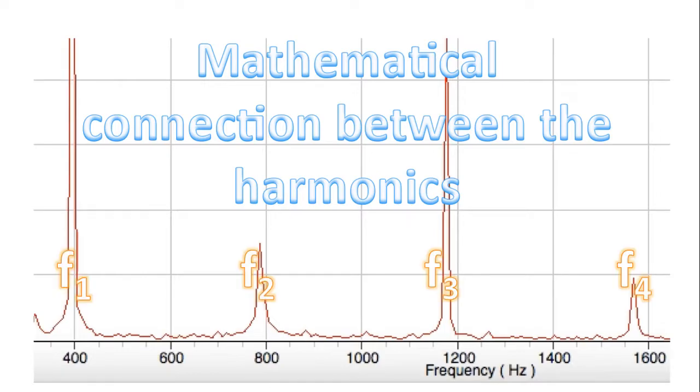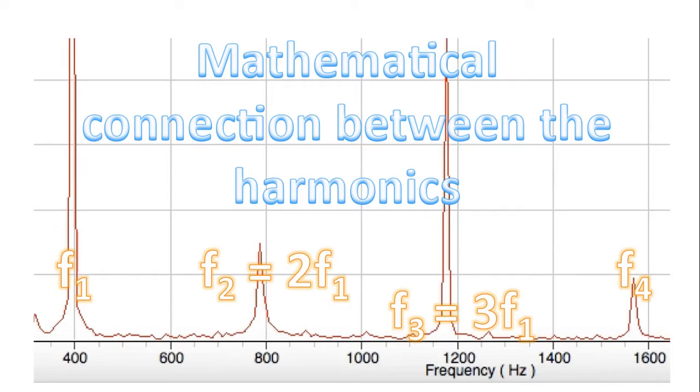Now there's a mathematical connection between the harmonics. So we'll give them the following names: f1, f2, f3, and f4 for first harmonic, second harmonic, third harmonic, and fourth harmonic. Notice that the second harmonic frequency is exactly two times the first harmonic frequency. And the fourth harmonic frequency is exactly four times the first harmonic frequency.